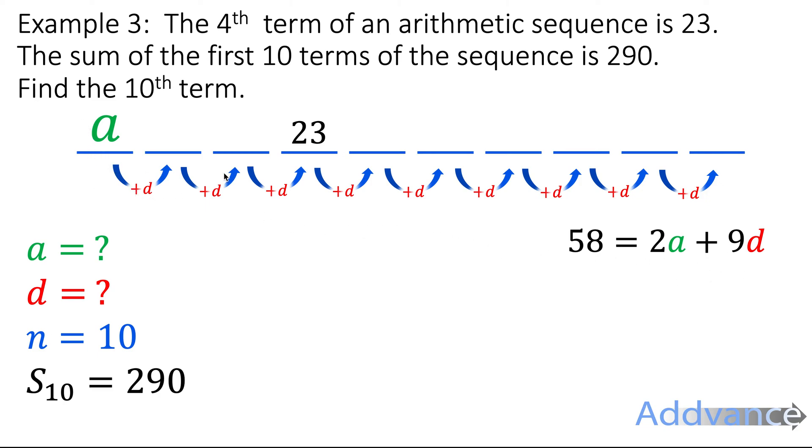However, what I can use is this information here. That the 4th term is 23. And so I know that if I add D, add D, add D - A plus D plus D plus D - I get 23. So A plus 3D is 23.